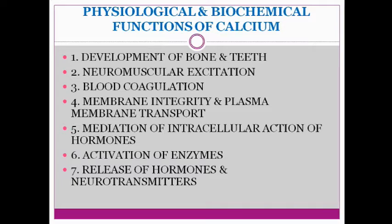Calcium metabolism: the plasma concentration of calcium is maintained within range and the ionized calcium is the biologically active form. The first function is development of bone and teeth. Phosphorus is very essential for the formation of teeth and for the physical strength of skeletal tissue. Next is neuromuscular excitation — calcium is important for transmission of nerve impulse. It acts with troponin C to start muscle contraction and activates ATPase which increases interaction between actin and myosin.